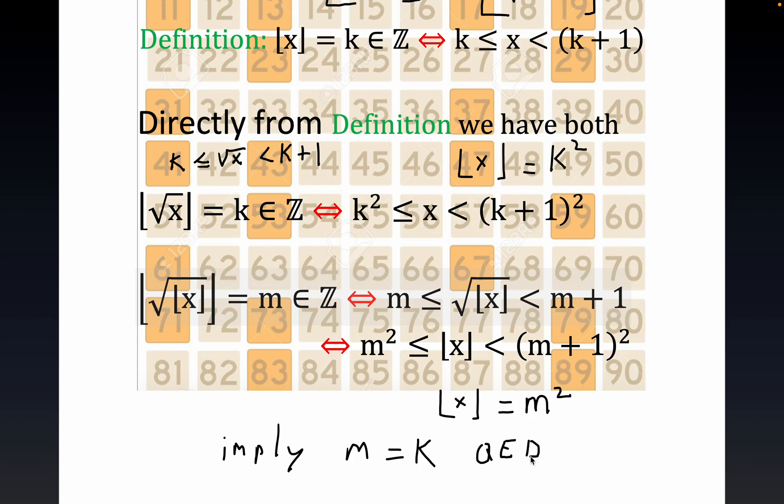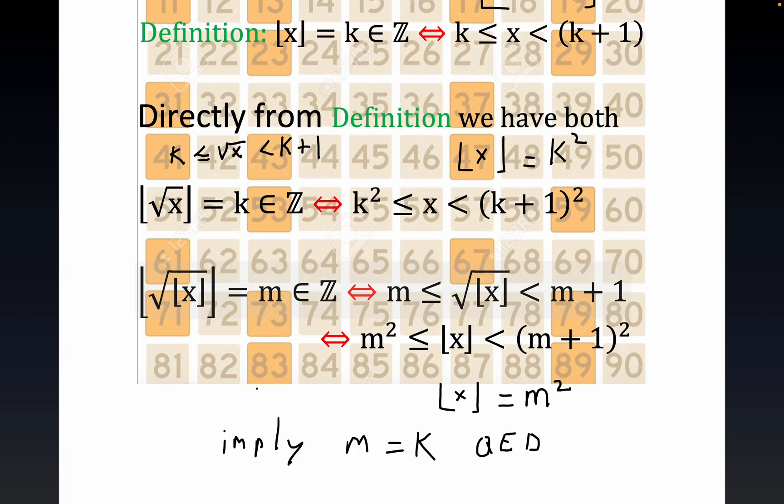They talk about the joining of discrete math and continuous math, and this is an example of that. If you look at the floor function, it is a discontinuous function at the integers but it's mostly continuous.